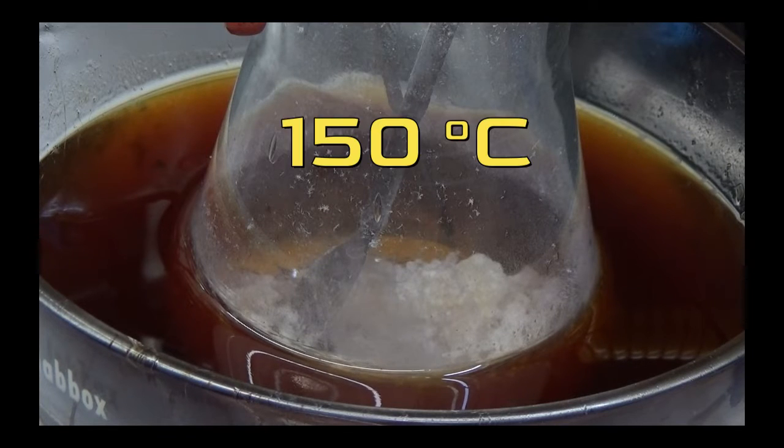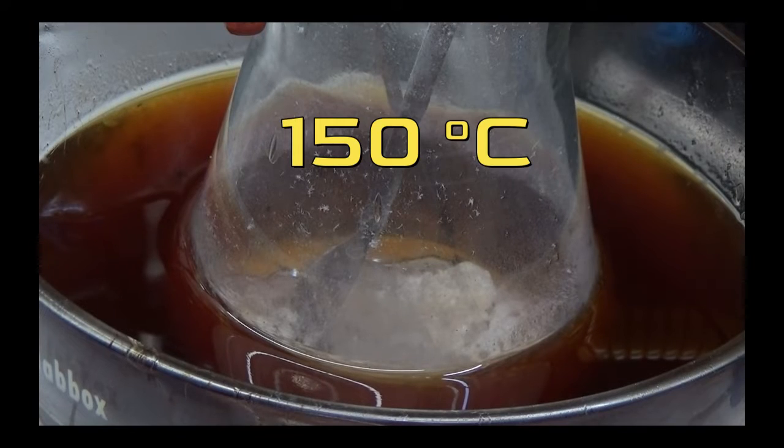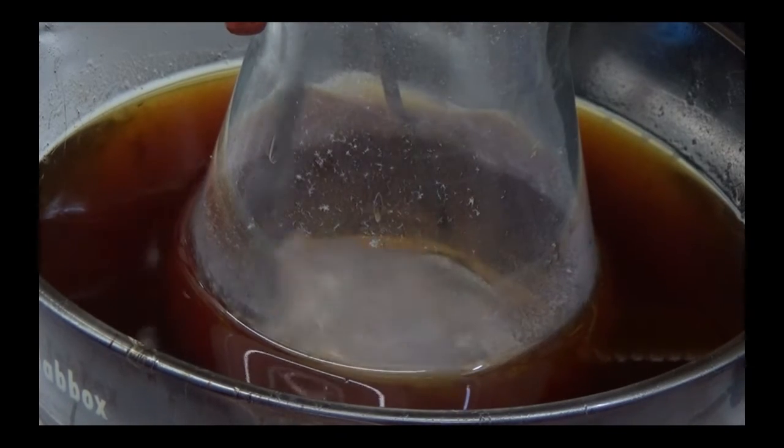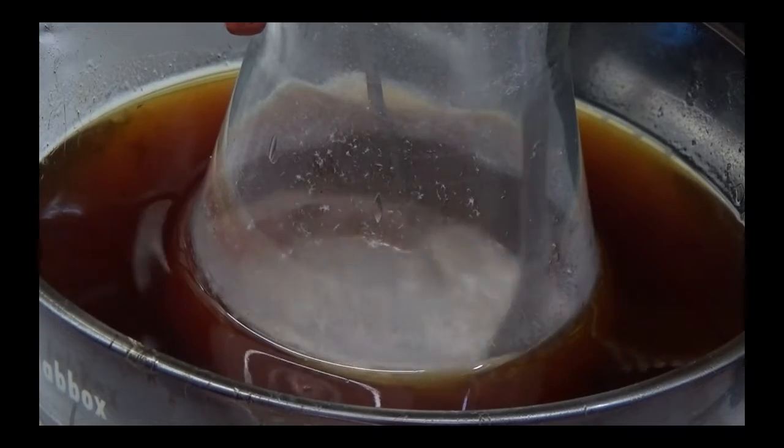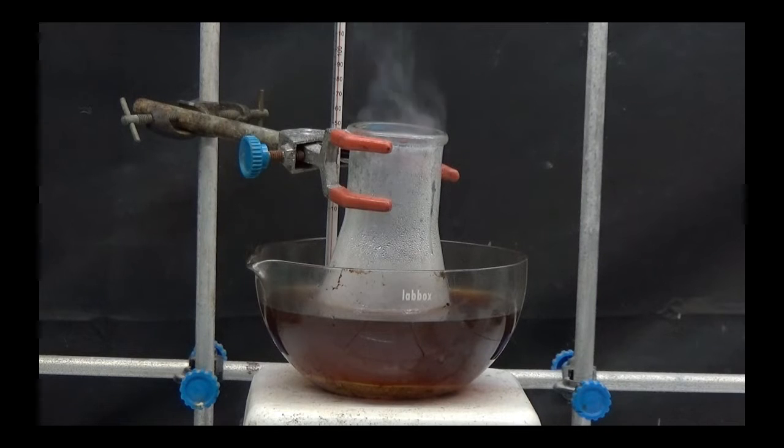Heat the flask in an oil bath until it reaches 150 degrees. Once the mixture melts, homogenize it with a spatula and continue heating for 2 hours while stirring. Toxic fumes are produced by this operation. Working outdoors or in a fume hood is recommended.